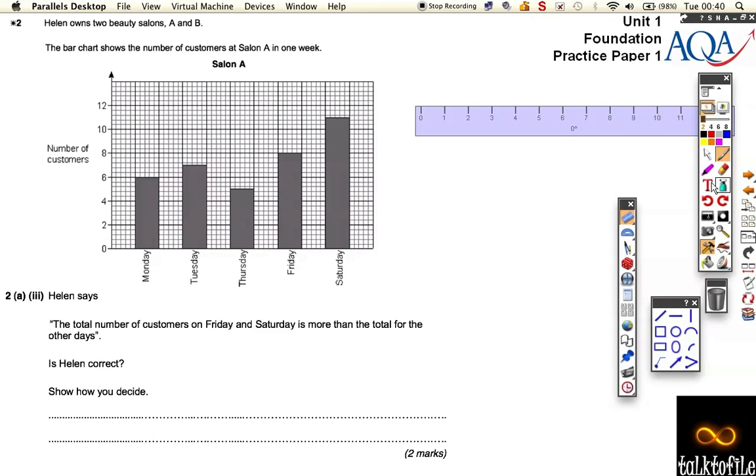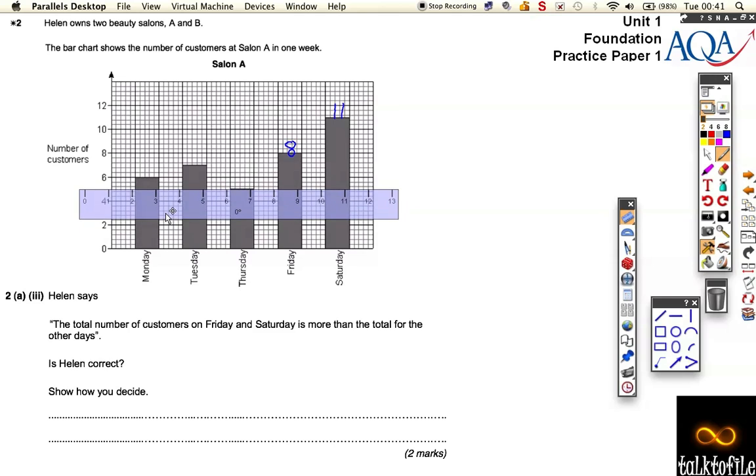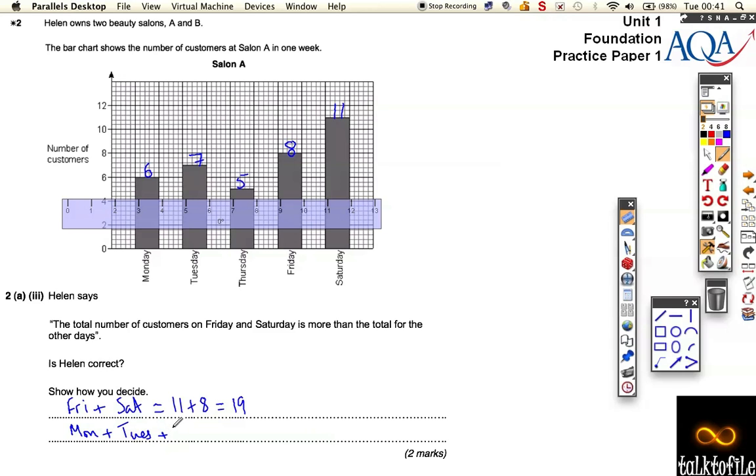I'm going to go over the page. Now it says, well, Helen says that the total number of customers on Friday and Saturday is more than the total for the other days. So we just need to find all the totals. Well, we know that Saturday was 11, so I'm going to write that on top. Let's just line this one up. That one lines up nicely on 8. So there's 8 on Friday. Thursday is obviously 5. It's just a good way to check, an easy way to check in the exam. 7 on Tuesday, and you can see there's 6 here. Well, we've just got to do a little calculation. So if we do Friday plus Saturday, those are the two days, so it's 11 plus 8, you get 19, so there's 19 customers on those days. If we do Monday plus Tuesday plus Wednesday, we're doing 6 plus 7 plus 5, so I make that 18.